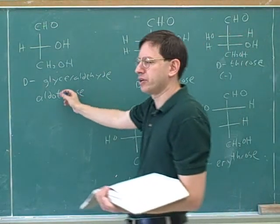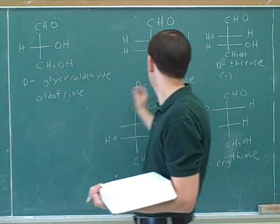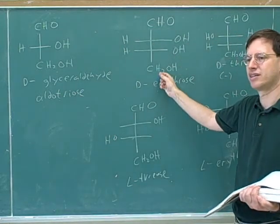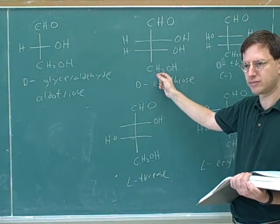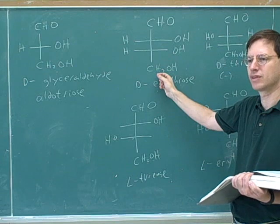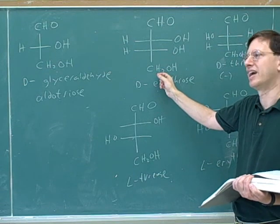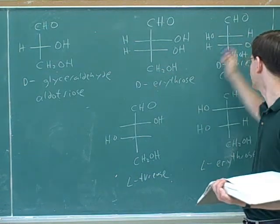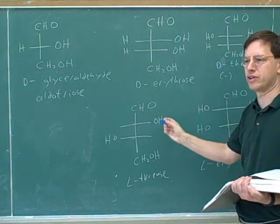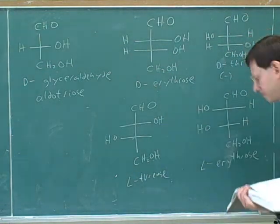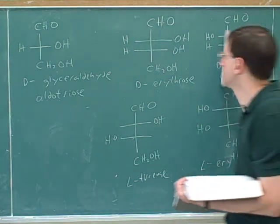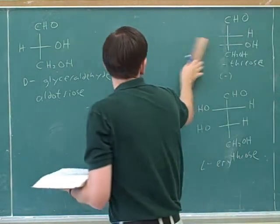If glyceraldehyde is an aldotriose, what type of compound is erythrose or threose? Counting the carbons: one, two, three, four — these are aldotetroses. All of the four-carbon aldehyde-based sugars discussed are aldotetroses.